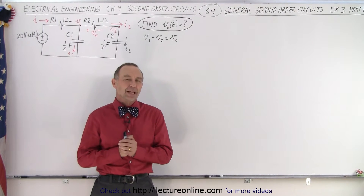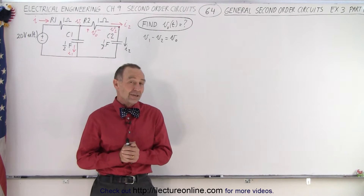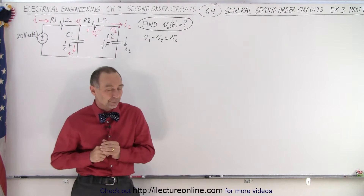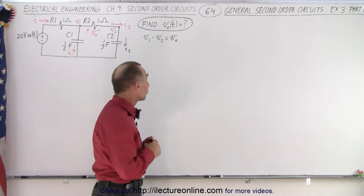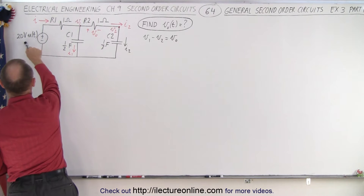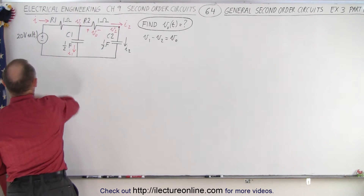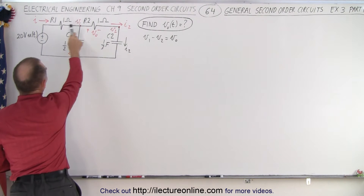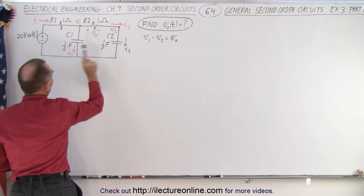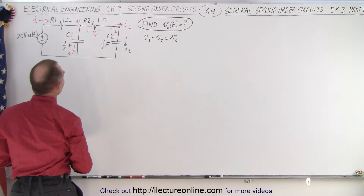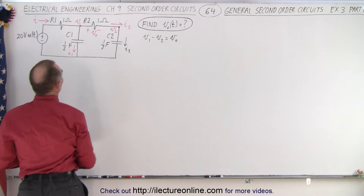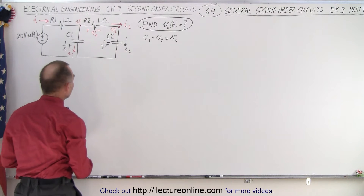Welcome to Electronline. Now let's try a circuit that has two capacitors in it, so we'll have to work that one a little bit differently. Here's our circuit: we have a voltage supply that provides 20 volts at time equals zero, two resistors of one ohm each, a capacitor of one-half farad, and a capacitor of one-third farad. We're trying to find the voltage across resistor two as a function of time.